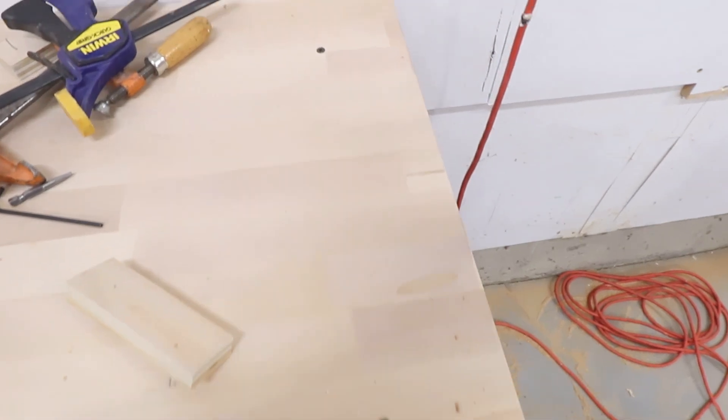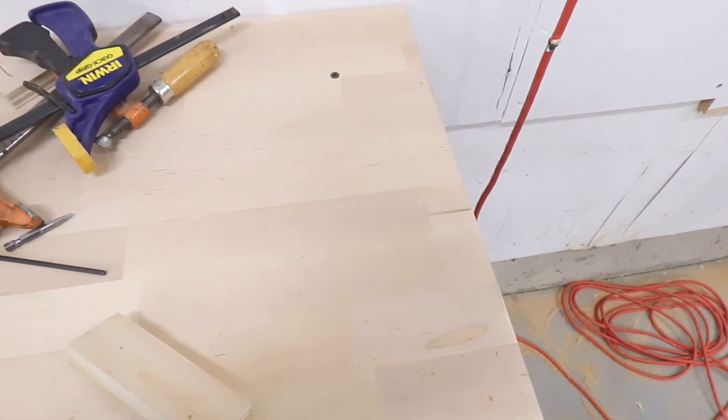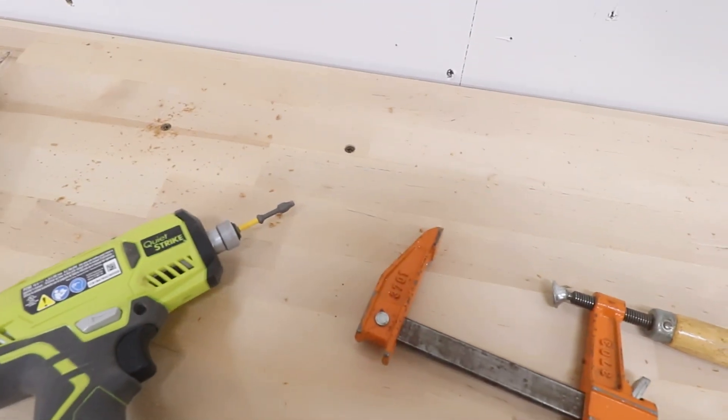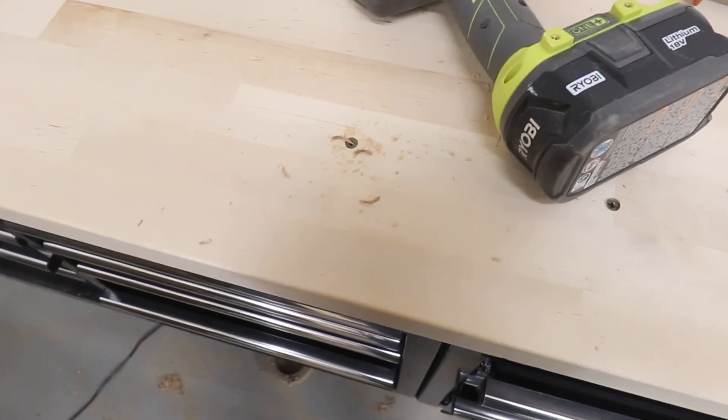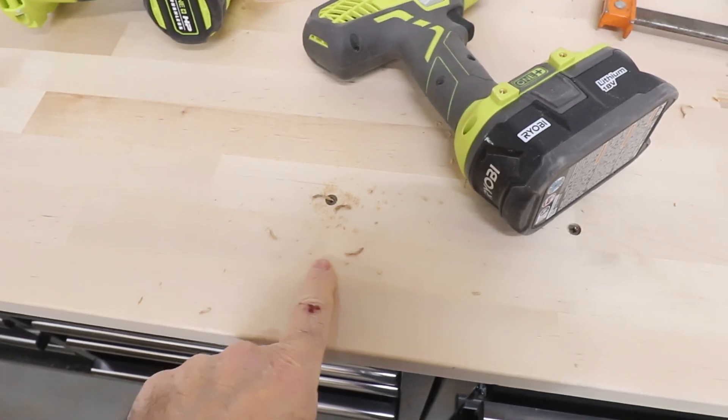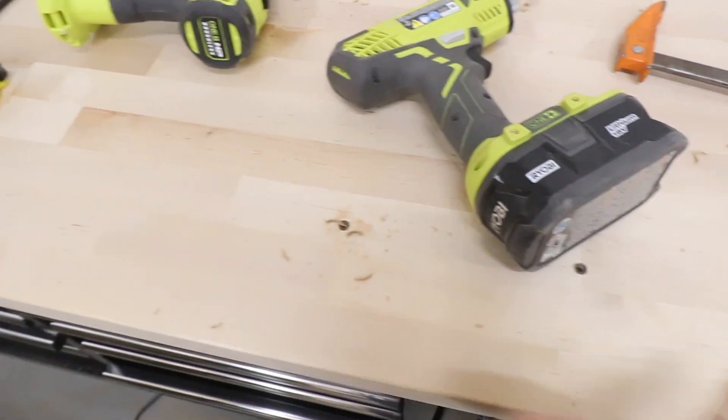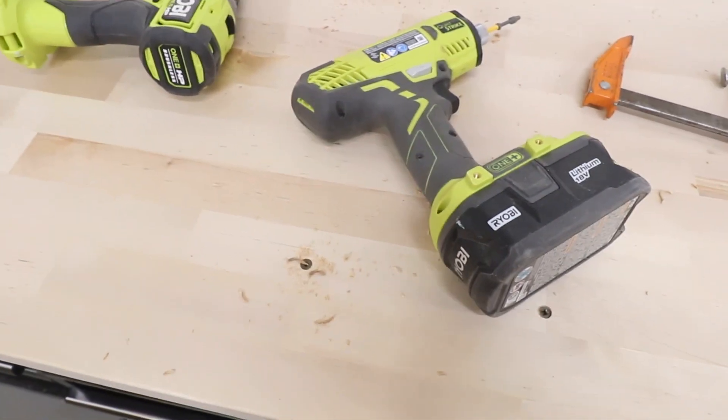The top is fastened to the wooden top of the Harbor Freight cabinets with four two-inch screws. Four on this side and four on this side, so basically eight screws total.